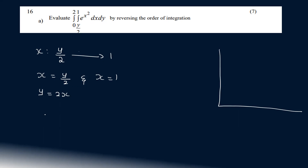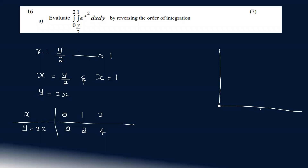For the line y equals 2x, a few values: when x equals 0, y equals 0; when x equals 1, y equals 2. So you have the line y equals 2x and then the line x equals 1.